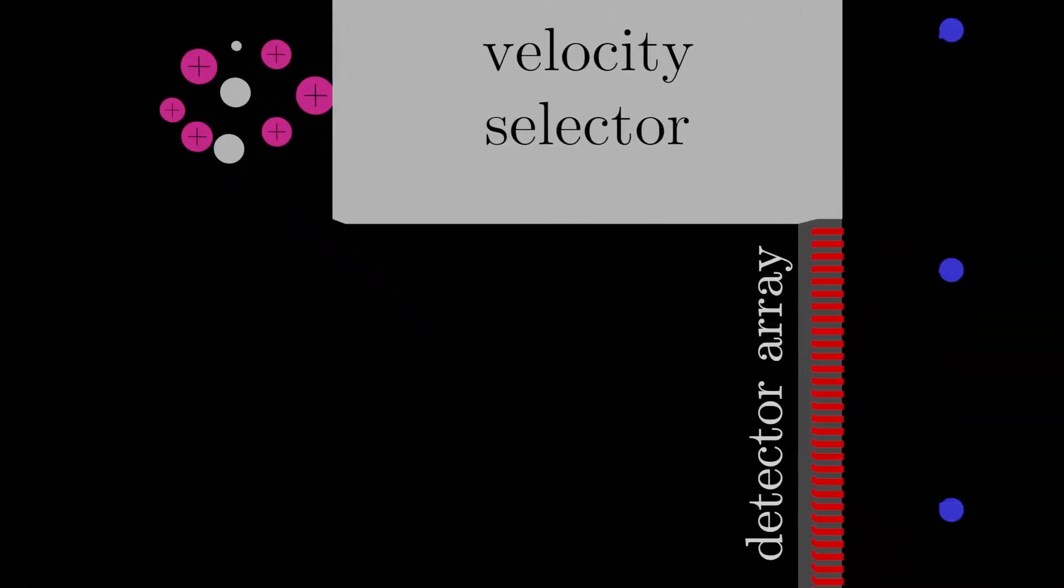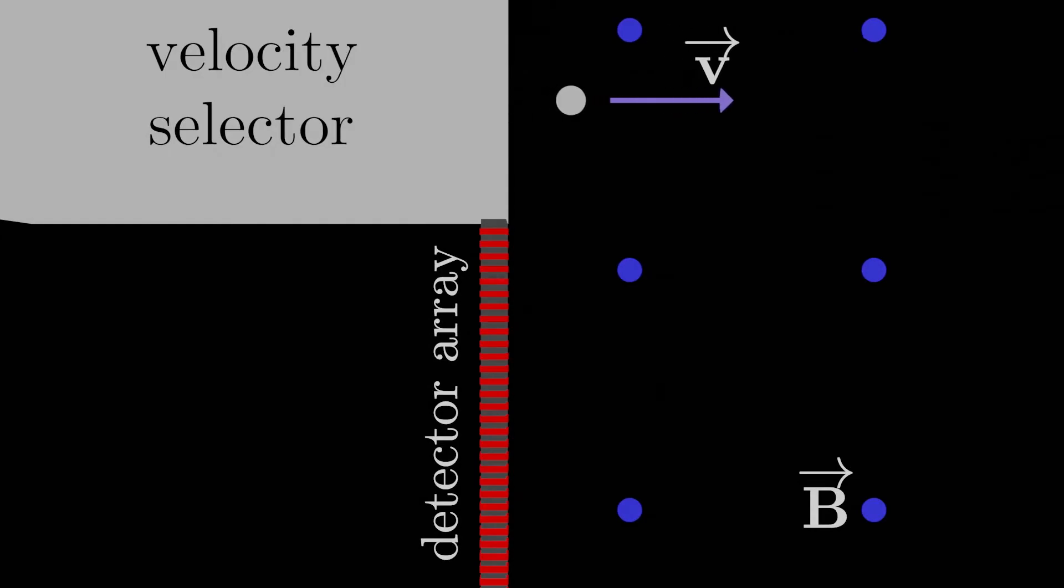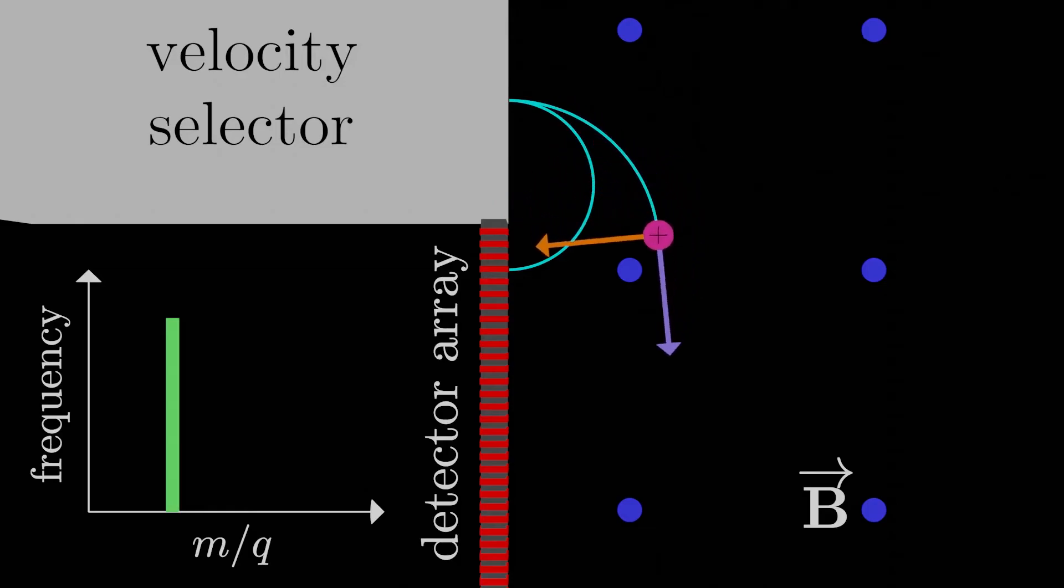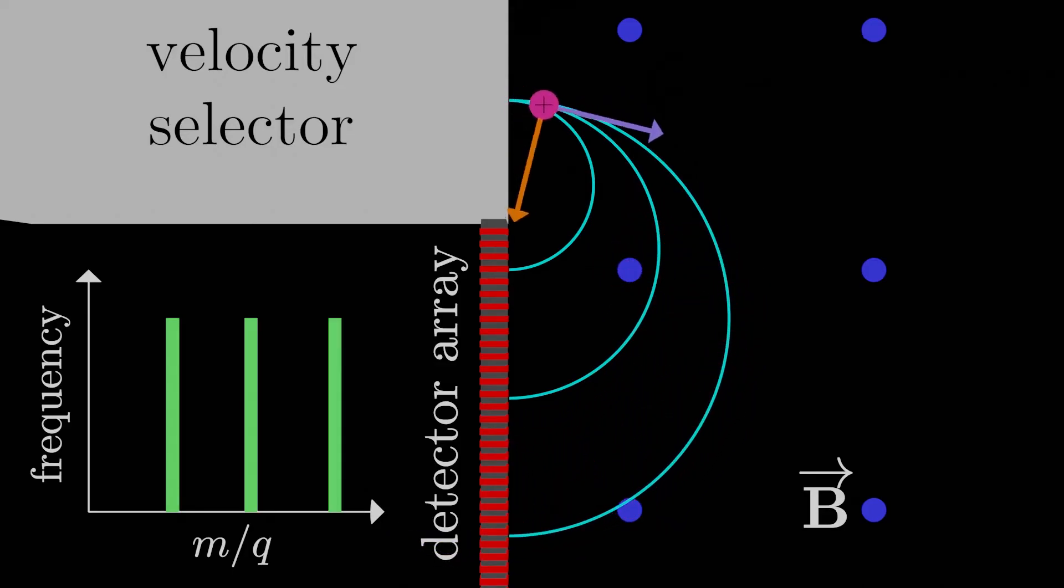Then you can just shoot all those ions through a mass spectrometer, so first the velocity selector part, then the part with just the magnetic field. Of course, the fragments that aren't charged, colored white here, they don't get deflected by the magnetic field because they're not charged. As for the other fragments, they have different masses, so the small ones accelerate quickly and the large ones accelerate more slowly. That means different sized fragments hit different spots on the detector array. And what you end up with is something like a fingerprint for this particular substance.